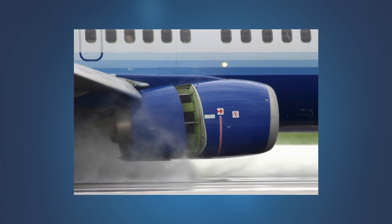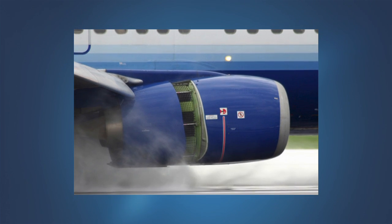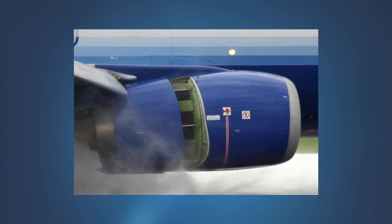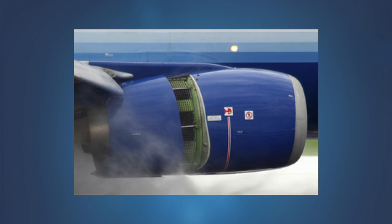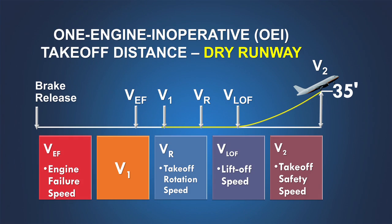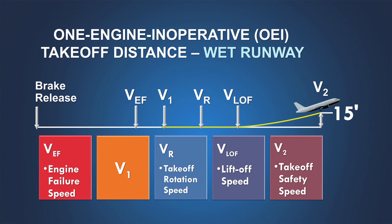The reduction in braking friction is partially offset by the stopping performance credit permitted for the use of thrust reversers on a wet runway if they are installed and operative. On a dry runway, the one engine inoperative takeoff distance ends when the airplane reaches a height of 35 feet above the runway. The regulations allow us to consider that the wet one engine inoperative takeoff distance is complete when the airplane reaches 15 feet rather than 35 feet required for a dry runway.